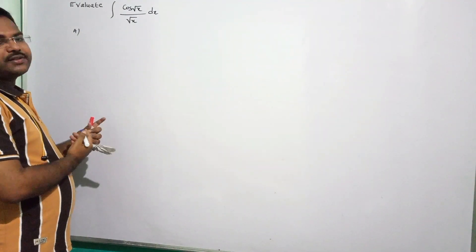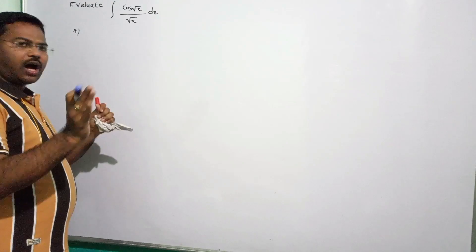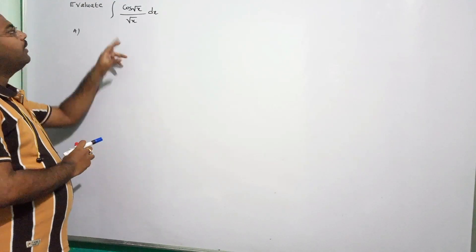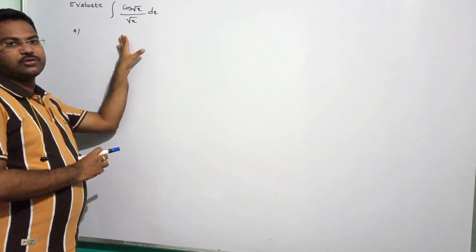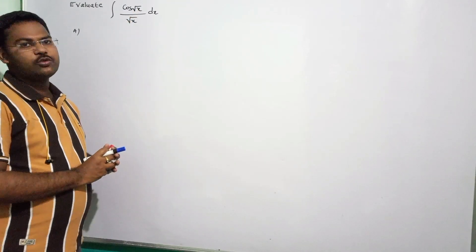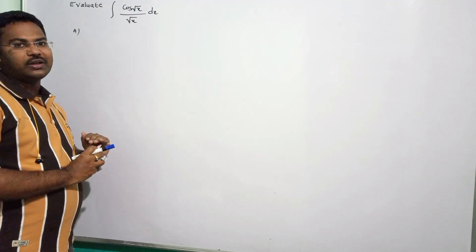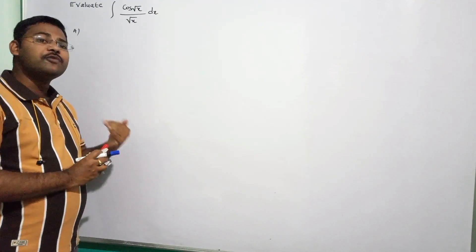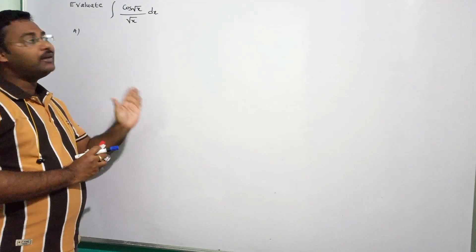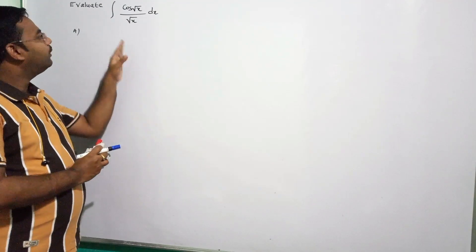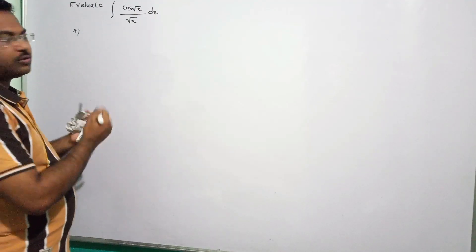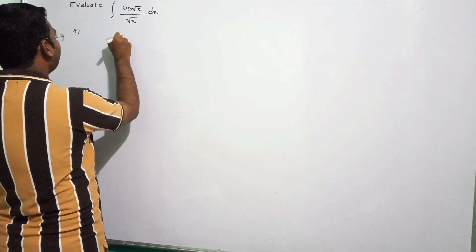Next problem: evaluate integral of (cos√x / √x) dx. There is no direct formula here, so we use substitution method. Let t = √x. Differentiating: dt/dx = 1/(2√x), so 1/√x · dx = 2dt.